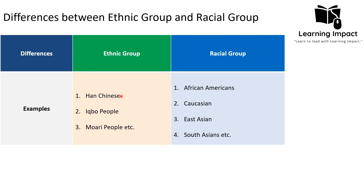There are various examples of ethnic groups in any society. In Indian society, for example, there are people who speak Bengali and those who speak Marathi, forming different ethnic groups. In Pakistani society there are Pashtuns, Sindhis, and Punjabis — these are grouped on the basis of shared language, culture, and traditions.